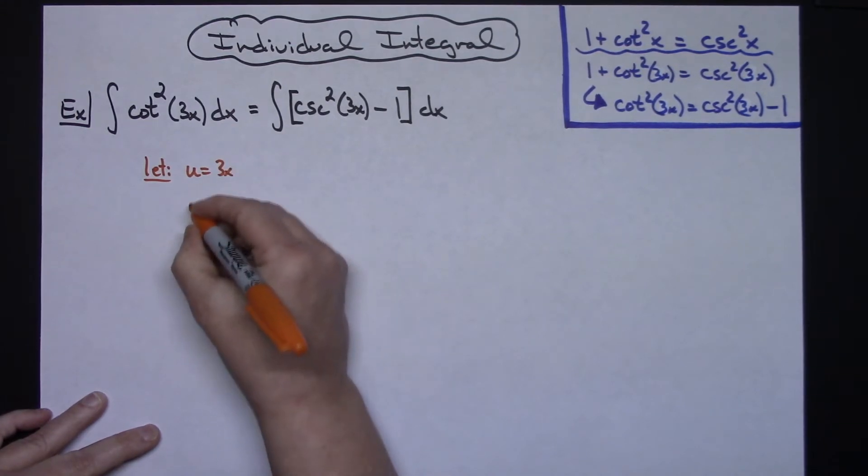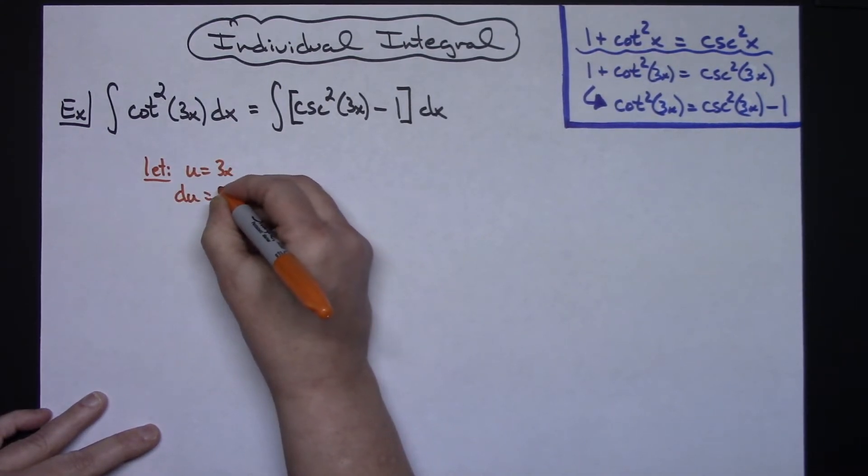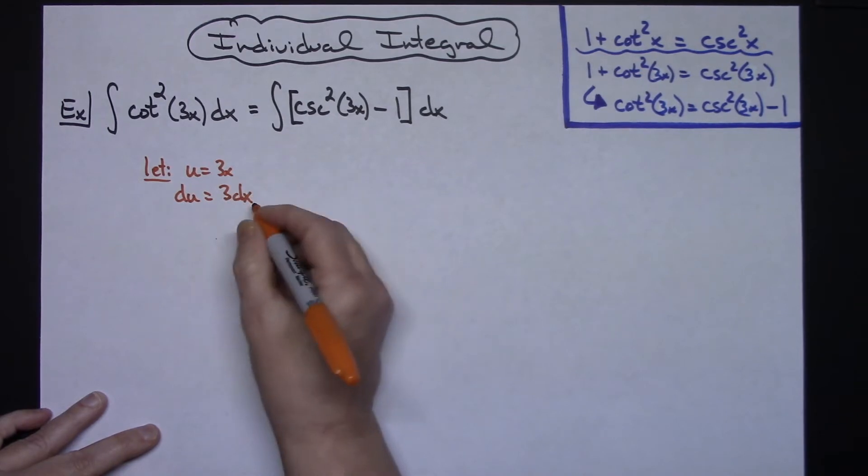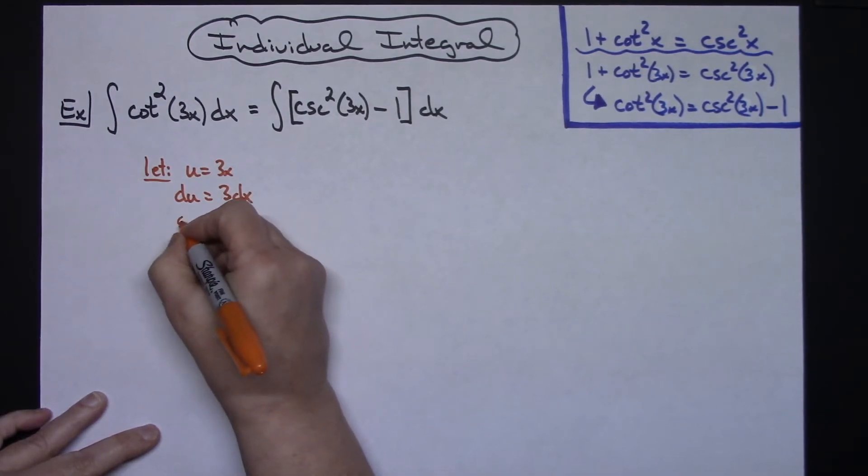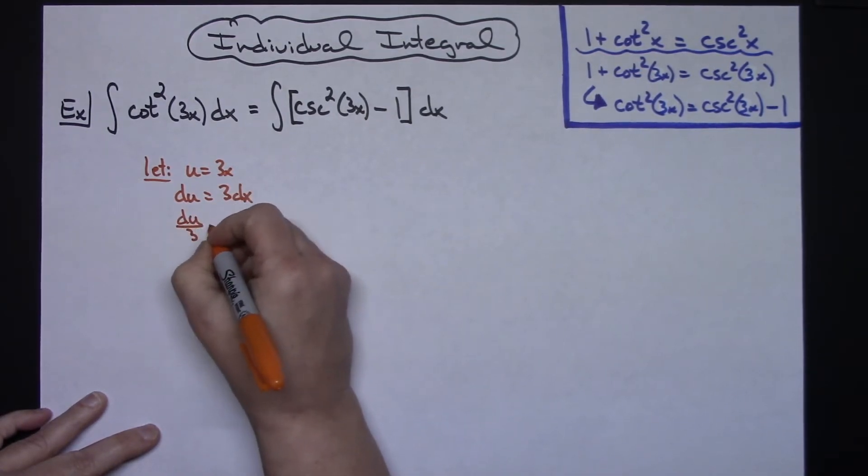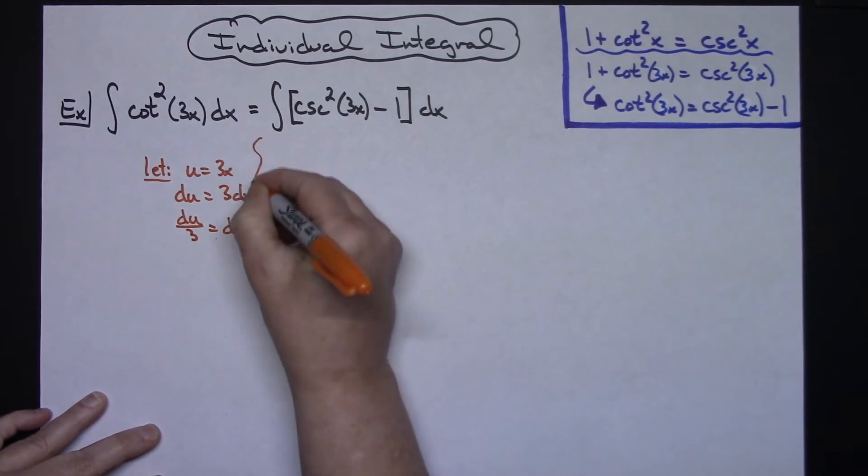I'm going to take the derivative of both sides so du will be equal to 3 dx, and then I can divide both sides by 3 so du over 3 is equal to dx.